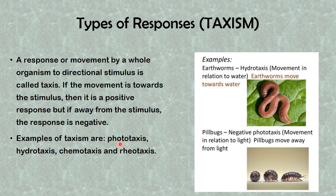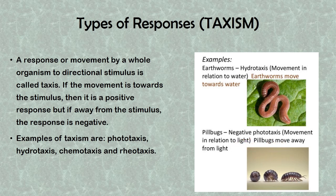Examples of taxism include phototaxis (response to light), hydrotaxis (response to water), chemotaxis (response to chemicals), and rheotaxis (response to water current). For example, earthworms move towards water — this is positive hydrotaxis. In the case of the pill bug, they have negative phototaxis, meaning they move away from light.